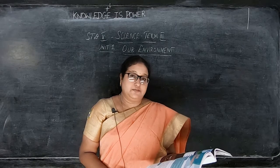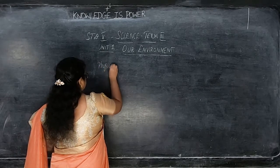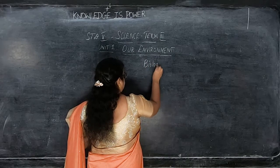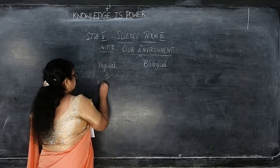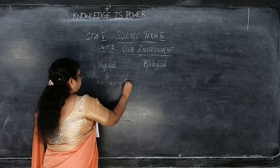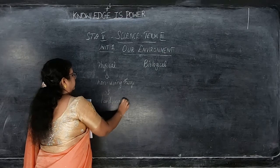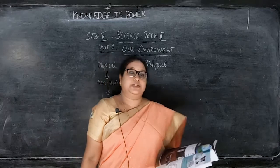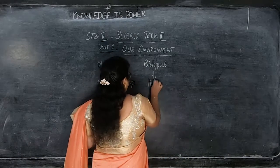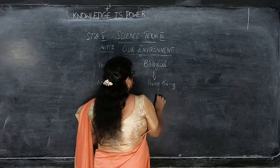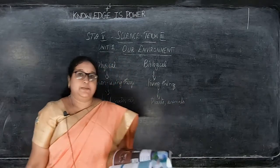There are two types of environment: physical environment and biological environment. Physical environment includes all non-living things — like land, water, and air — all these come under physical environment. Biological environment includes living things, and the examples are plants and animals. Plants and animals all come under living things, which is the biological environment.